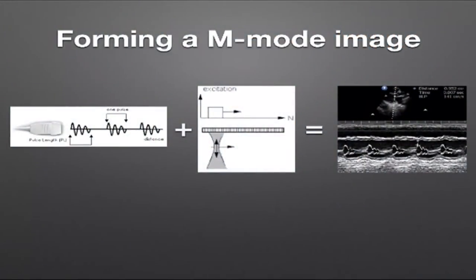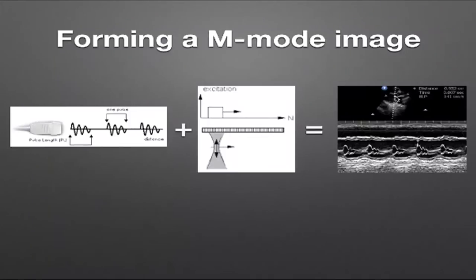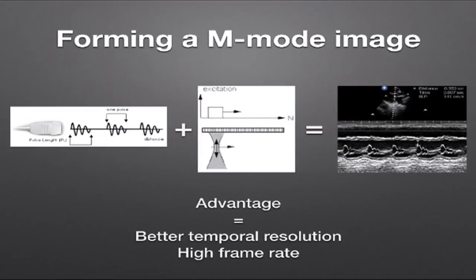M-mode, or motion mode, sends out a pulsed ultrasound wave from just one group of arrays and focuses on that single line only — for example, through the tips of the mitral valve leaflets to assess left ventricular size and wall thickness. The advantage is dramatically better temporal resolution, with a frame rate of around 1,000 frames per second, because the machine only has to send a pulse down one plane and listen, rather than scanning across an entire sector.